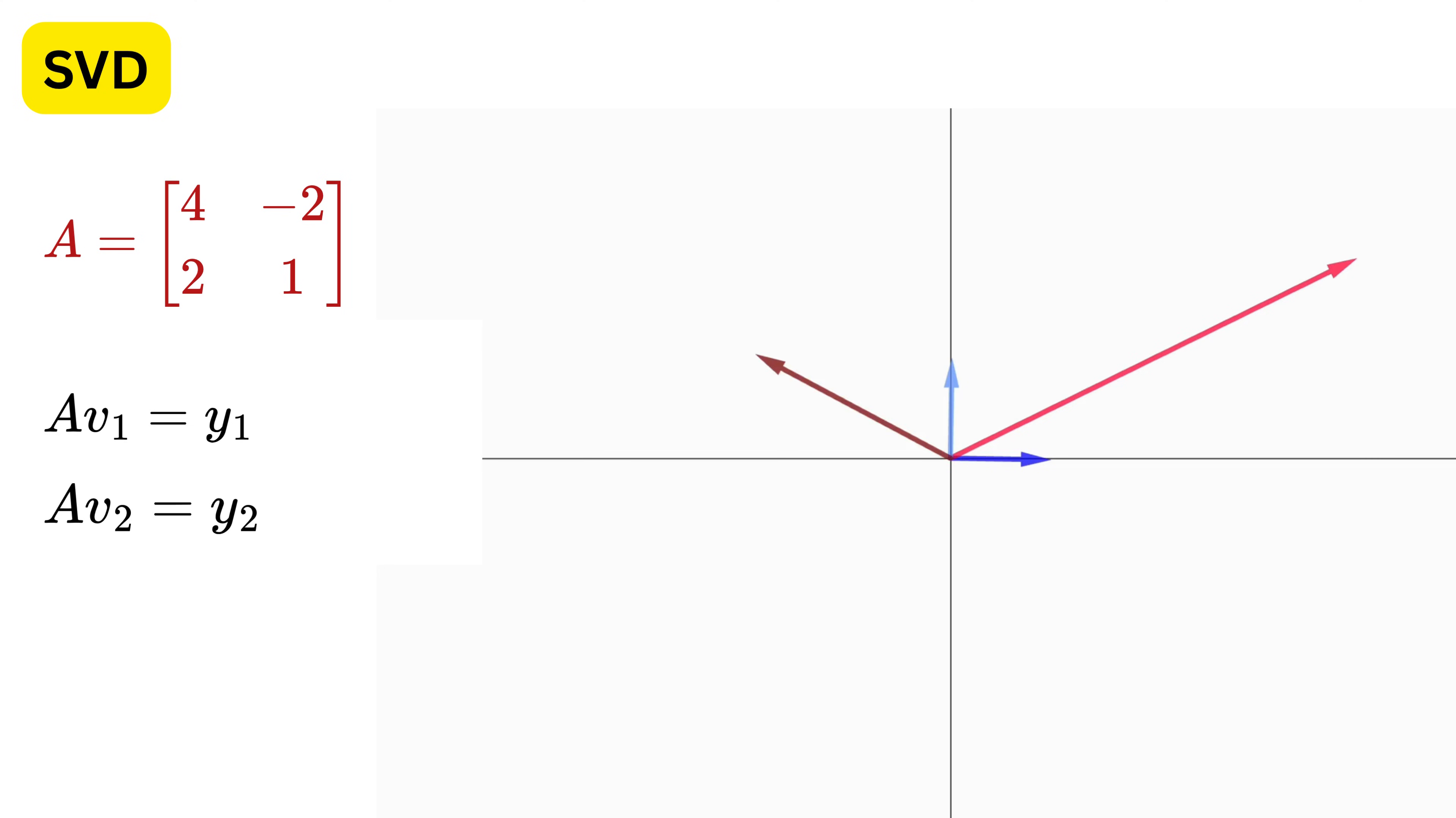and then check whether the transformed versions Y1 and Y2, which we will show using this maroon colored vector, still remain perpendicular. See, when I rotate V1 and V2 together, the angle between Y1 and Y2 also changes.